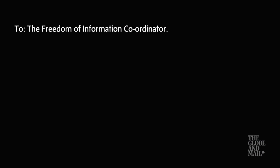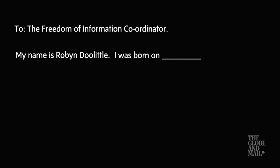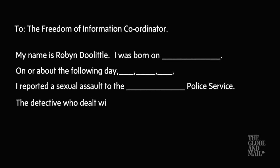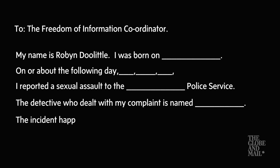What you need to include in your letter is just enough information that they're able to find your file. Perhaps you have a case number — if you do, that'll make it a lot easier, but if not that's totally fine. You can say: 'My name is Robin Doolittle. I was born on such-and-such a date. On or about such-and-such a date I reported a sexual assault to the XYZ police service. The detective who dealt with my complaint is named XYZ. The incident happened at such-and-such location.' That should be enough for them to find your file.